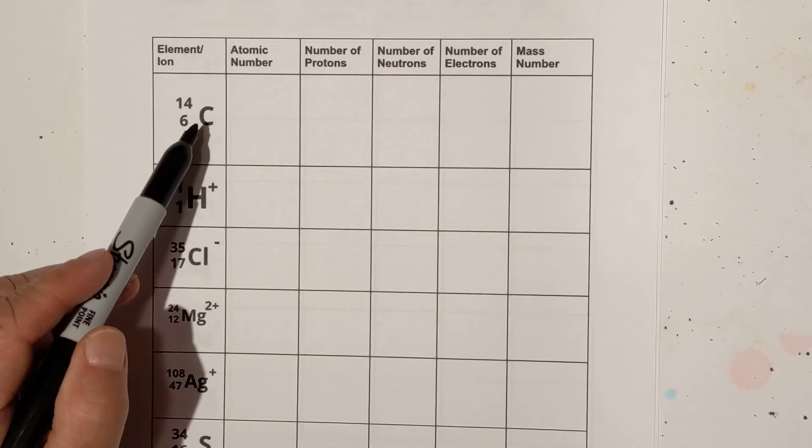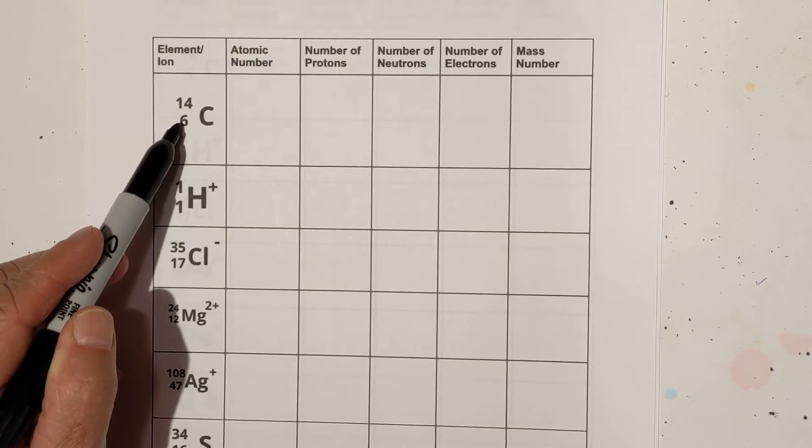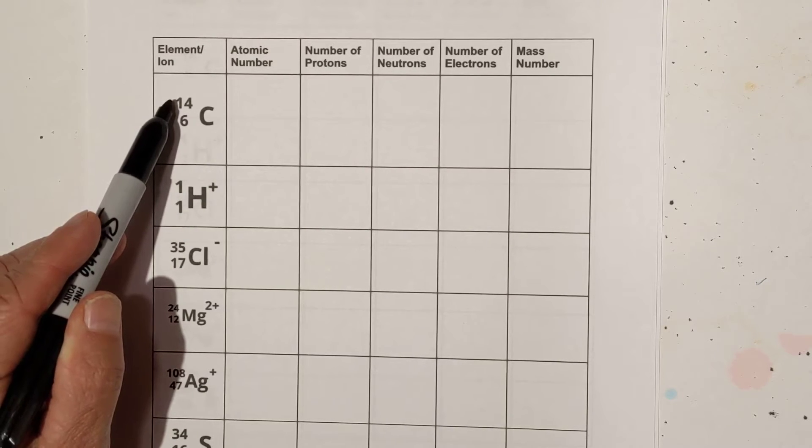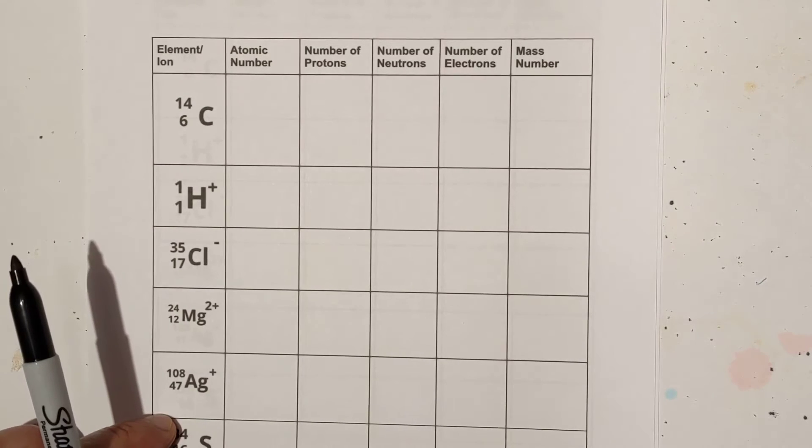If you look at this, this is the symbol, this is carbon. This will be the atomic number, the lower the six, and this will be the mass number, which is the combination of the number of protons and neutrons. So let's get started.